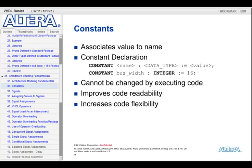Generics are essentially constants whose values can be passed in from other modules and changed at compile time. Local constants, invisible outside of the model, are declared in the architecture declaration section.